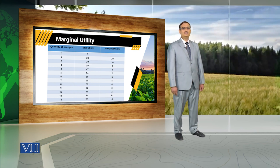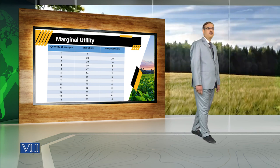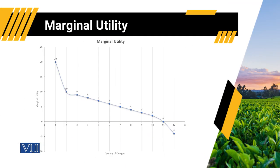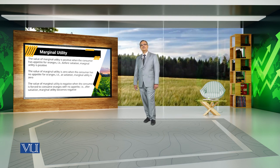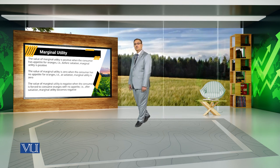In the computation of marginal utility, the point of satiation plays an important role. Graphically, marginal utility up to unit 11 is greater than 0, but against the 11th unit of orange, marginal utility is equal to 0, while if someone is using more than 11 units of oranges, his marginal utility becomes negative. Whether marginal utility is greater than 0, equal to 0, or less than 0 depends upon the point of satiation.